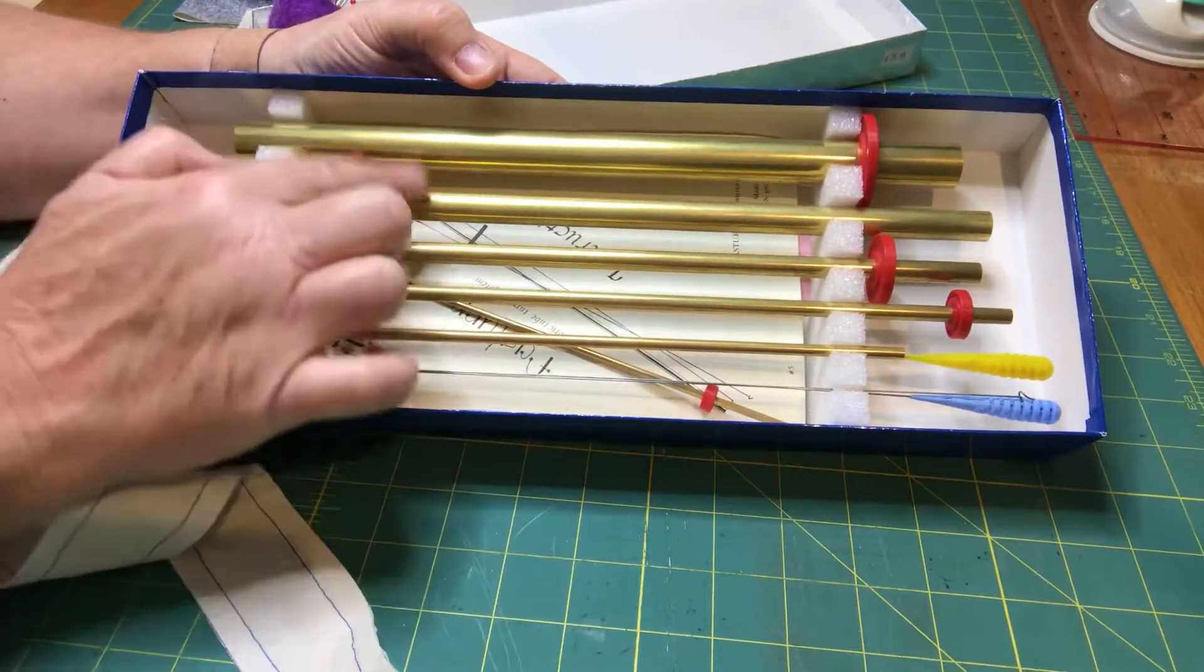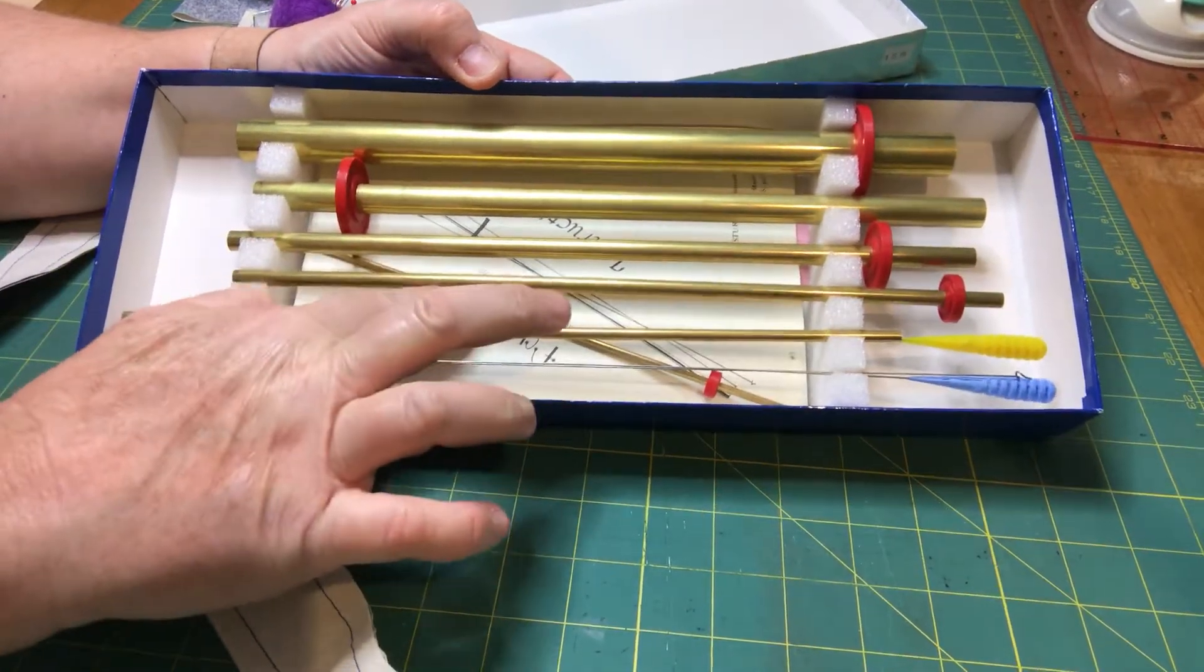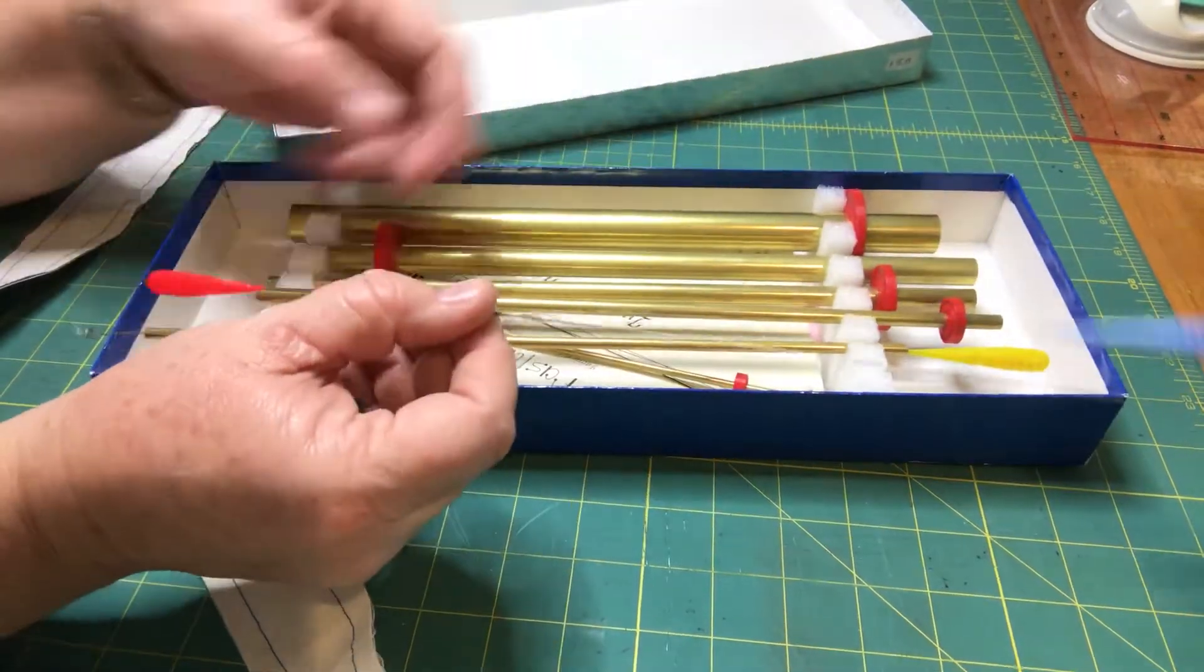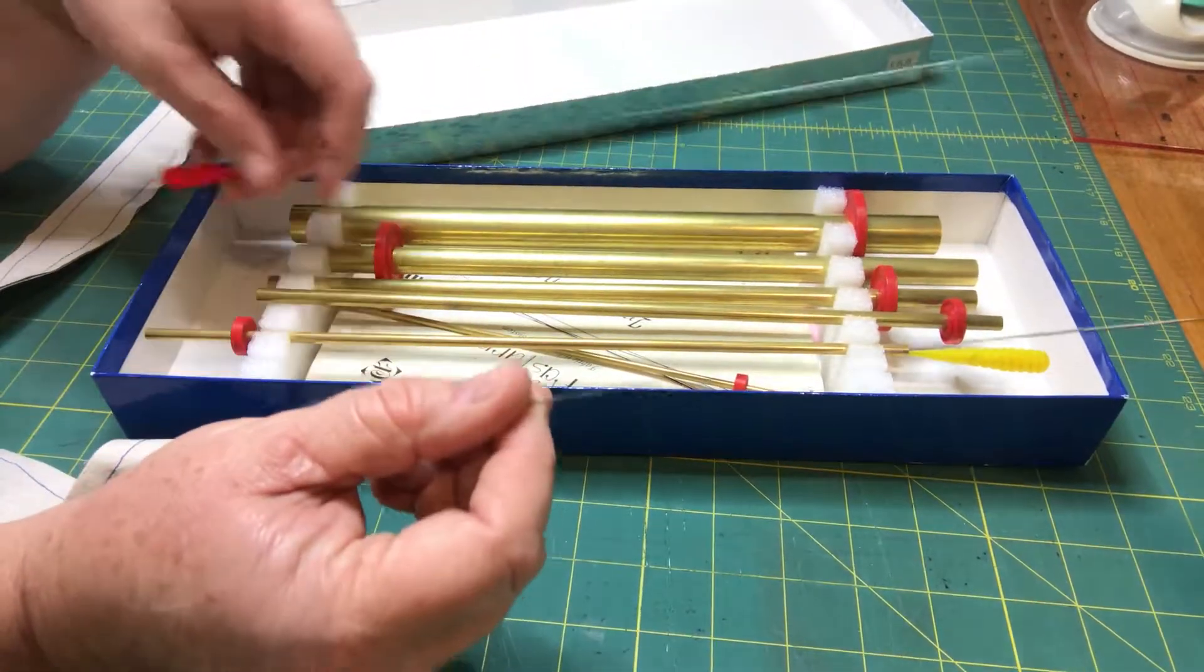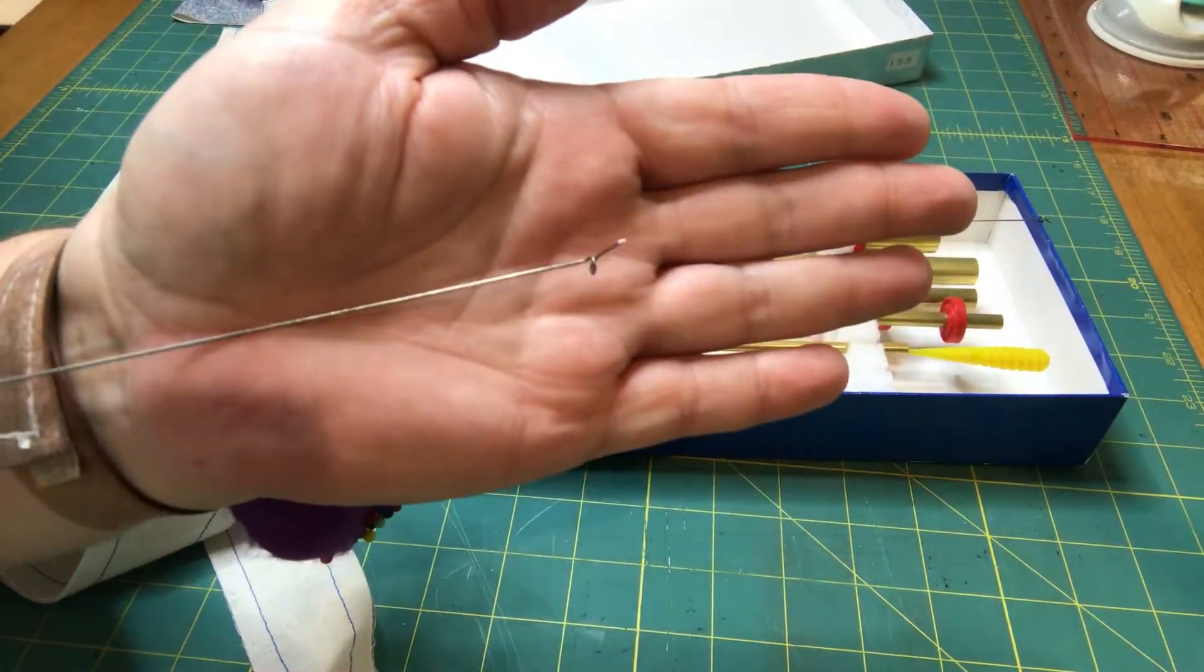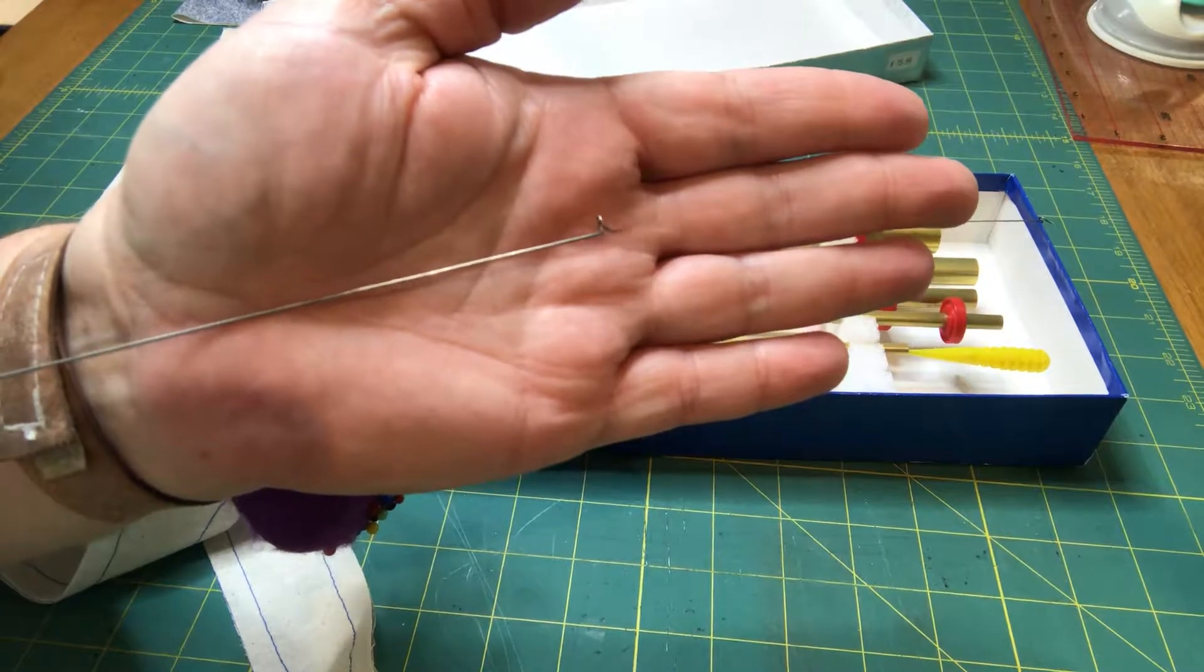There are six tubes - one, two, three, four, five, and a really thin six one under there - and three turning wires. And if you have a look at the end here it has a little hook and it hooks the fabric and pulls it through the tube.